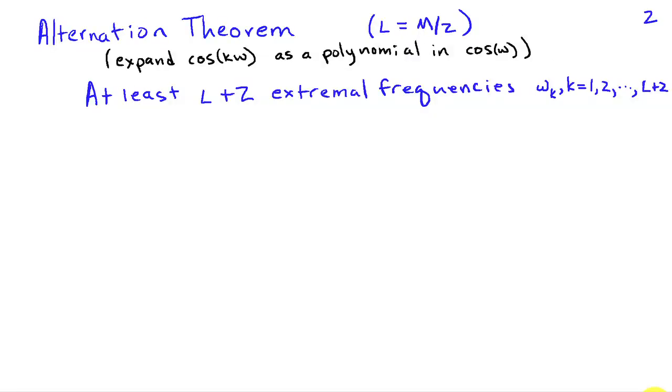A key result for solving the minimax design for FIR filters is to make use of the alternation theorem. So we're going to let L be equal to M over 2 so that we don't have to write M over 2 repeatedly. And recall that the number of coefficients we have to design is therefore L plus 1 because we had sum from K equals 0 to M over 2.